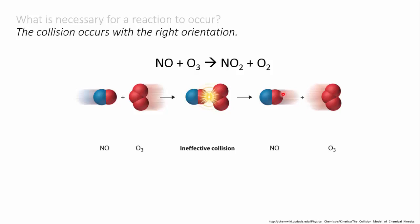Or the nitrogen end of the NO could bump into the ozone. This looks promising but it's bumped into the central oxygen in the ozone and it's unlikely that this will break bonds to both of the other oxygens. So again the molecules bounce off and continue on.